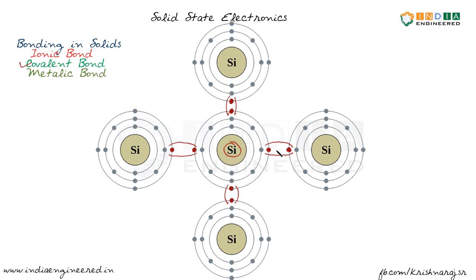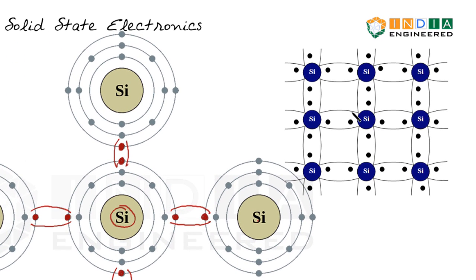Once the covalent bond is formed, we cannot say that a particular electron belongs to this silicon atom or that one — the electrons belong to the bond. This pattern repeats throughout the crystal. Each silicon atom also looks for three other silicon atoms, shares its electrons, and this extends along all dimensions. In the figure, the central silicon atom's four valence electrons are shared with four neighboring silicon atoms, and this is how the crystal is held in place.